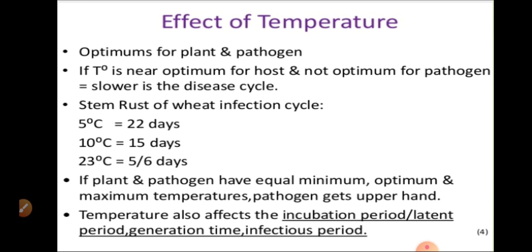We can see here the rust disease. For stem rust of wheat, which belongs to class Basidiomycetes: at 5°C it takes 25 days, at 10°C it takes 15 days, and at 13°C it takes 5 to 6 days. When plant and pathogen have equal minimum, optimum, and maximum temperature, the pathogen gets the upper hand. Temperature also affects the incubation period, latent period, or generation time of infected periods.